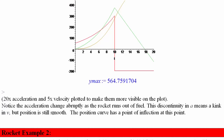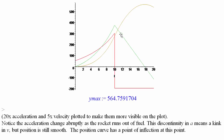Acceleration changes abruptly as the rocket runs out of fuel. The discontinuity in acceleration means a kink in the velocity graph, but velocity is still continuous. A discontinuous acceleration means the velocity has a discontinuous derivative, while the position remains completely continuous.